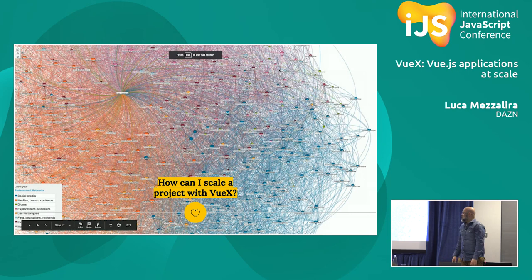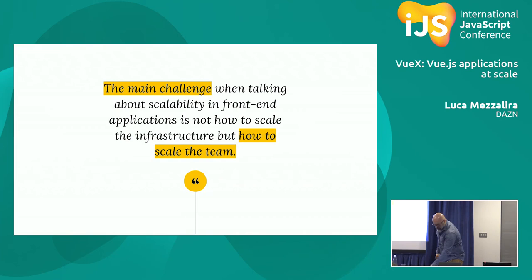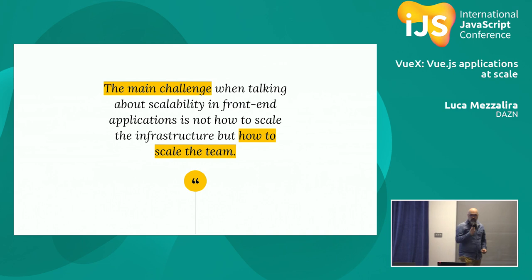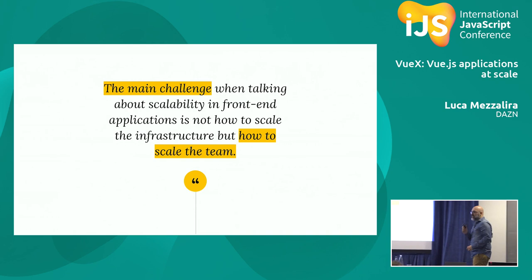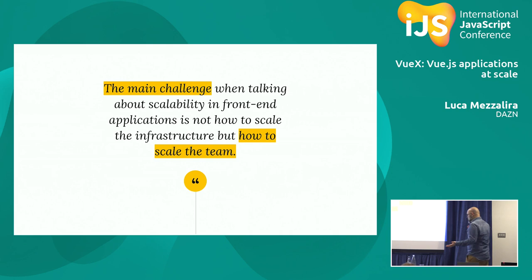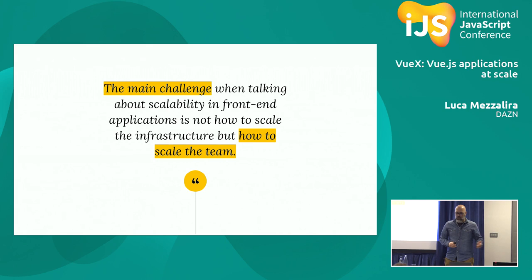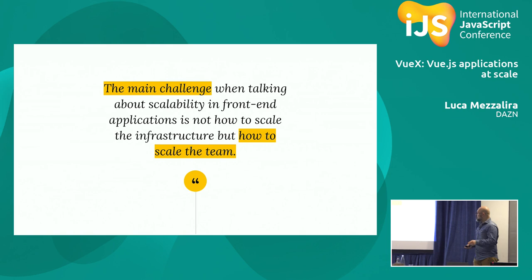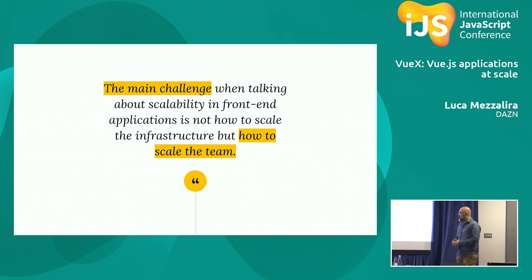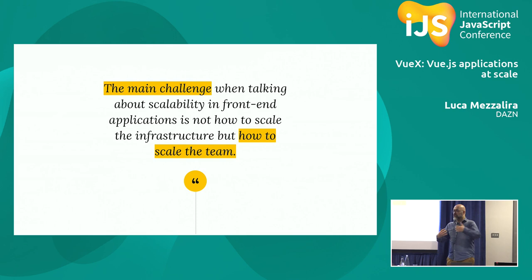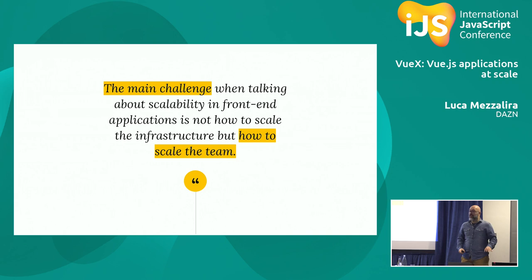How can we scale it? The first thing I've learned is that the main challenge is not scaling code on the front-end, but how we scale the team. I'm currently working with around 200 tech people — QAs, engineers, front-end, and back-end. It's not easy, particularly when distributed. The real question is how to architect with Vuex in a way that allows all these teams to work without wasting time breaking each other's code.